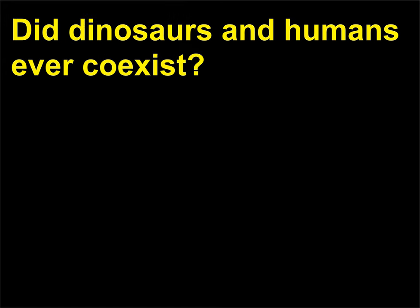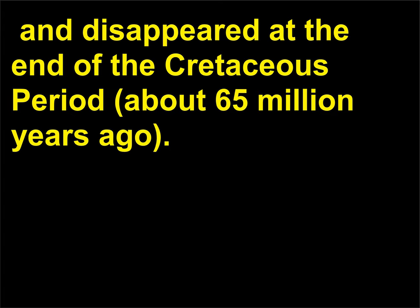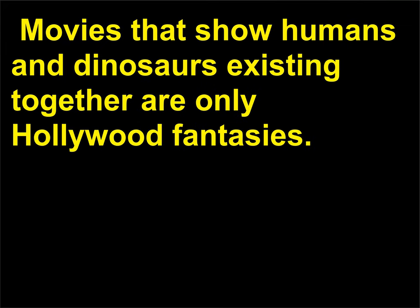Did dinosaurs and humans ever co-exist? Dinosaurs first appeared in the Triassic period, about 220 million years ago, and disappeared at the end of the Cretaceous period, about 65 million years ago. Modern humans, Homo sapiens, appeared only about 25,000 years ago. Movies that show humans and dinosaurs existing together are only Hollywood fantasies.